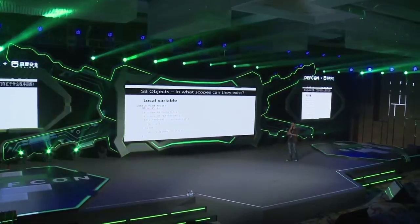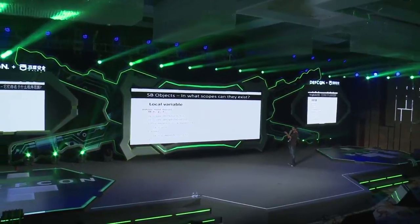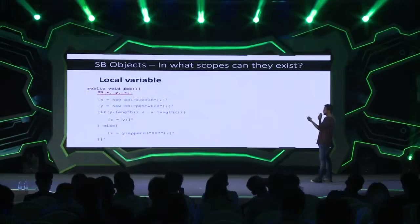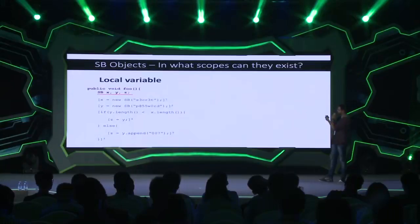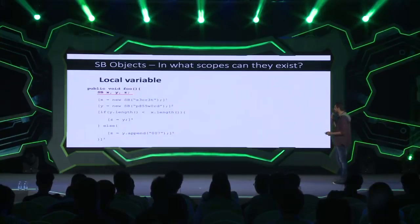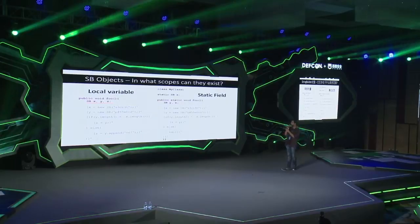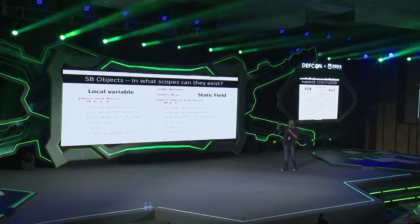In this recurring walkthrough example, variable x is instantiated with a StringBuilder object containing 'secret', y contains 'password', and there's some logic added for explanation purposes. Alternatively, objects can exist as static fields of a class — completely different because the scope of a static field is the entire program, not just a specific method. The value x can be invoked from anywhere using the class name, e.g., MyClass.